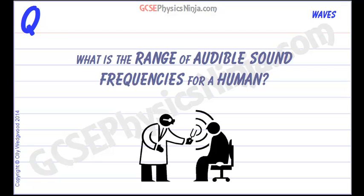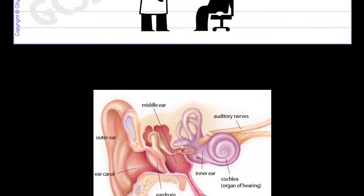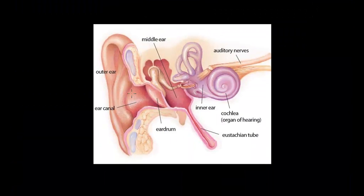What is the range of audible sound frequencies for a human? Now the human ear is an incredible piece of machinery and it's made up of your outer ear which funnels the sound waves into the canal.